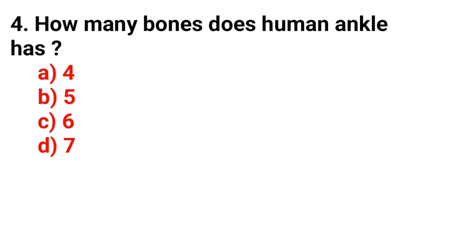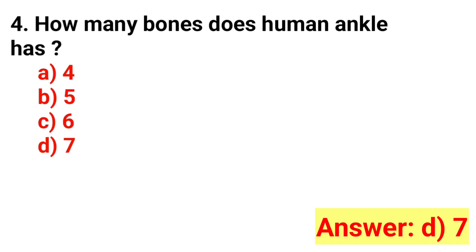Question number 4. How many bones does the human ankle have? The correct answer is Option D: 7.